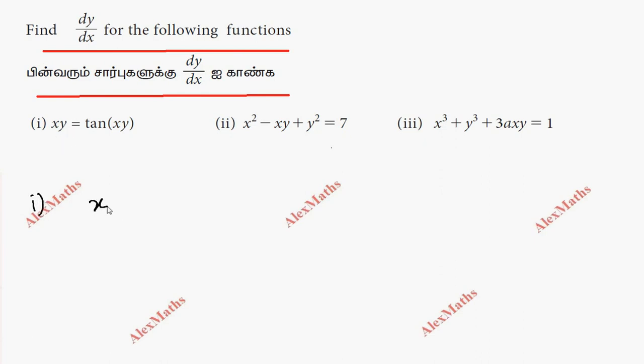First term times the differentiation of the second term, du/dx, plus second term y times the differentiation of the first term x. The differentiation of tan(xy) - the outer function tan differentiates to secant squared. So the outer function differential, the inner function as it is, then by chain rule, the inner function's differentiation next level.